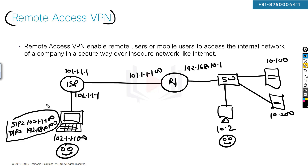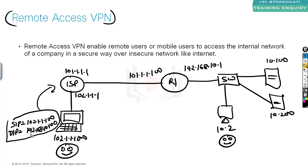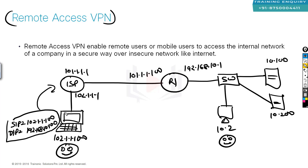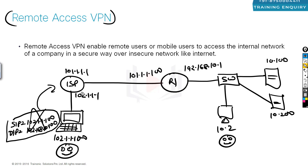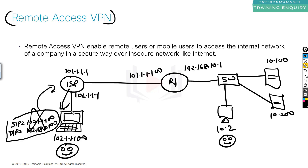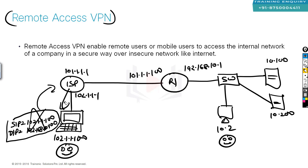Such a packet will go to the ISP. The ISP will check the destination — destination is 192.168.10.100, which is a private IP address. The ISP will drop it and say destination unreachable. So a normal packet cannot reach there.